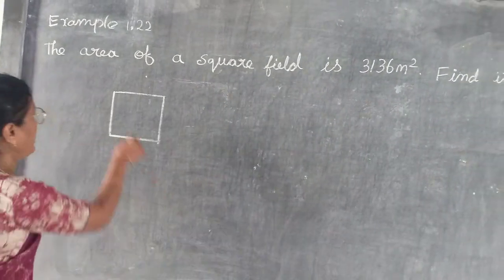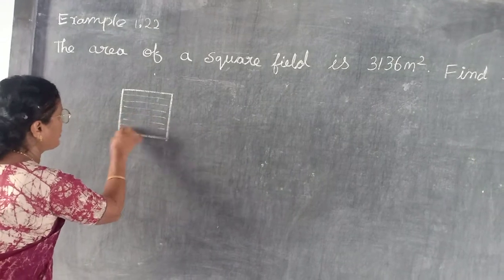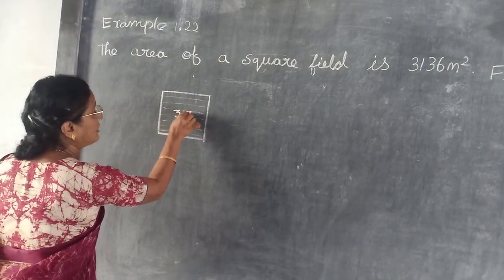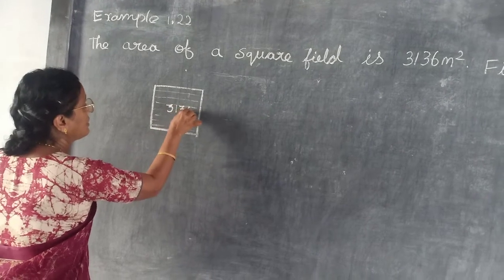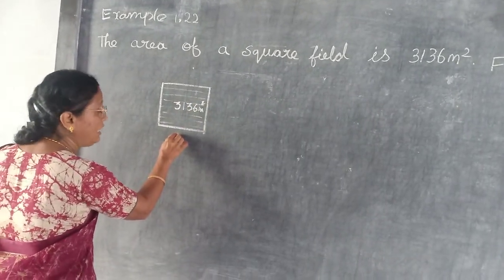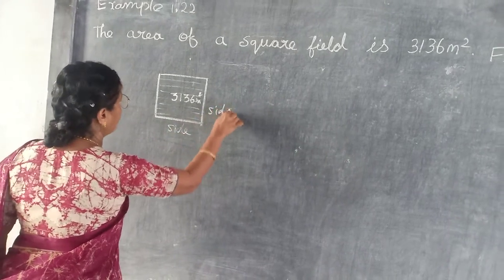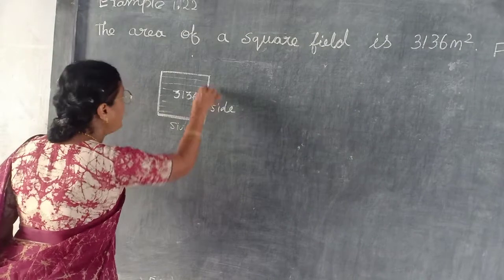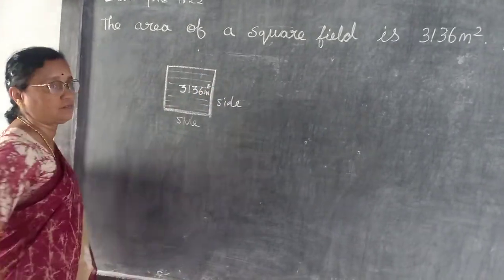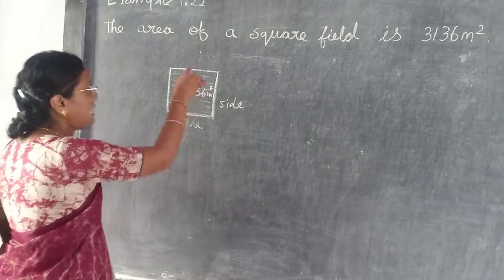They have given the area. Area is nothing but the shaded part — this is area. Area is 3136 meters square. So first you want to find out the side. You want to find out the length of the side of your square.